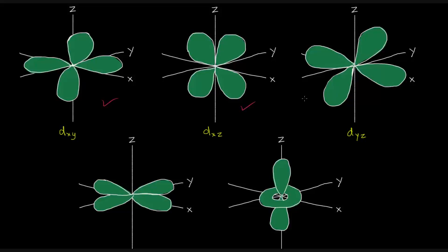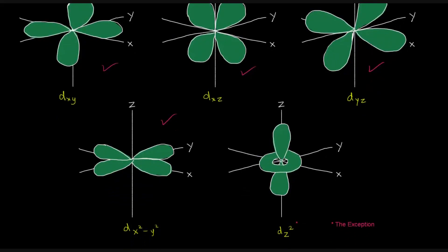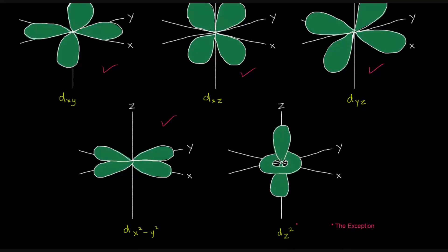But the point is that there are four of them that have this sort of clover shape. There's this one, this one, this one, and this one. This one here is the exception. It's the weird one. It looks kind of like a p orbital that's surrounded by a donut.